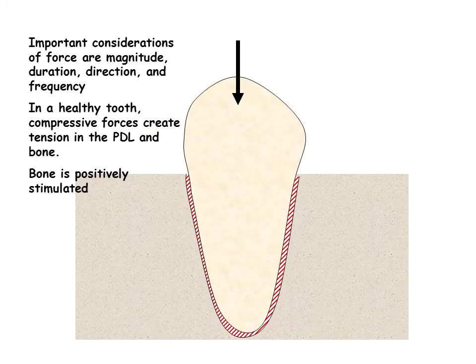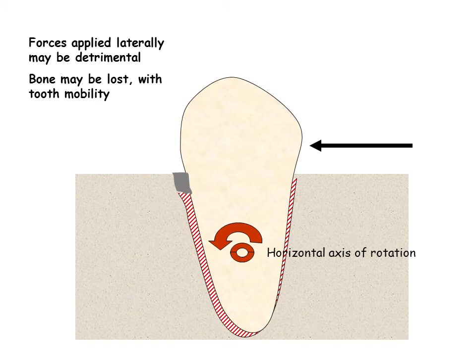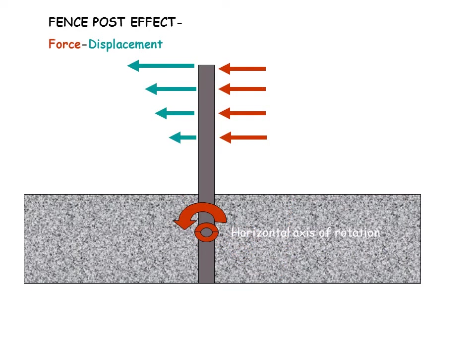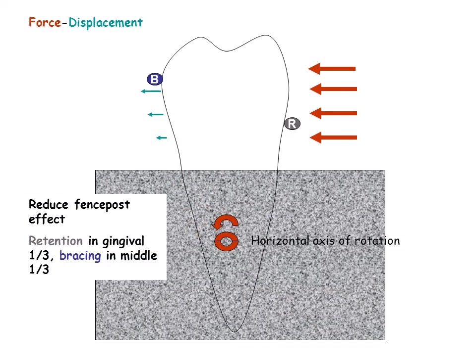Teeth are designed to best withstand forces directed down the long axis. Important considerations of force are magnitude, duration, direction, and frequency. In a healthy tooth, compressive forces create tension in the PDL and bone, and bone is positively stimulated. Excessive lateral force applied to the tooth may result in mobility and bone loss. When lateral force is applied, rotation about the horizontal axis of rotation causes tipping displacement of the tooth. The further the force is away from the horizontal axis of rotation, the greater the displacement — this is referred to as the fence post effect. To limit displacement due to the fence post effect, clasps should be designed with rigid bracing in the middle third of the tooth. Retention is found in the gingival third.